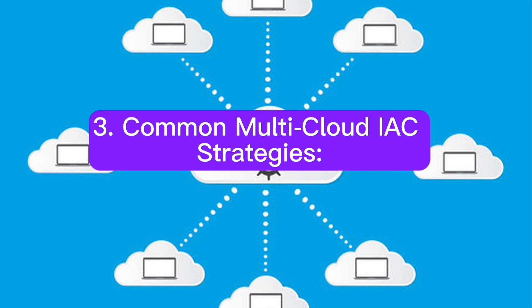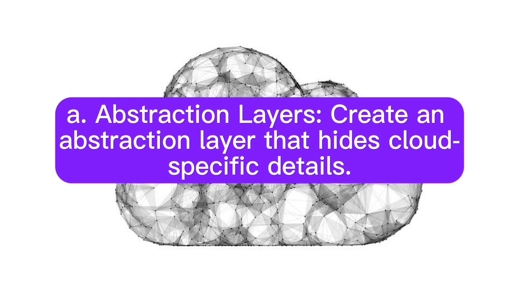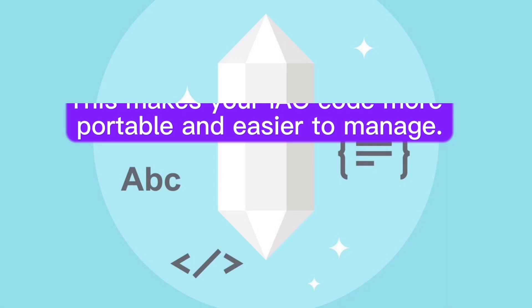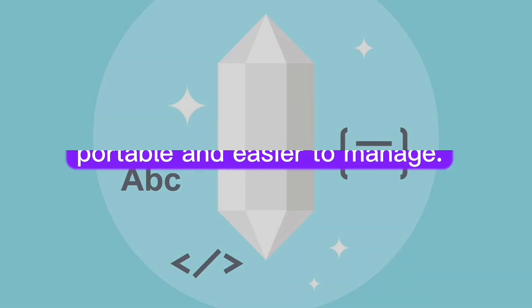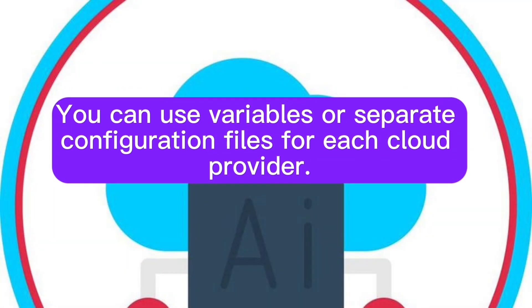Common multi-cloud IAC strategies. A: Abstraction layers. Create an abstraction layer that hides cloud-specific details. This makes your IAC code more portable and easier to manage. You can use variables or separate configuration files for each cloud provider.